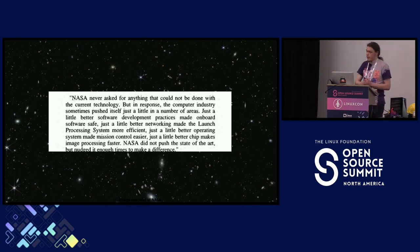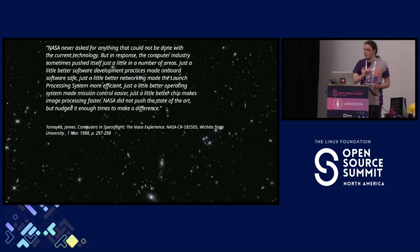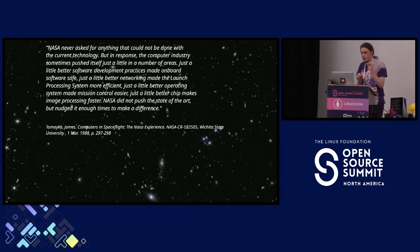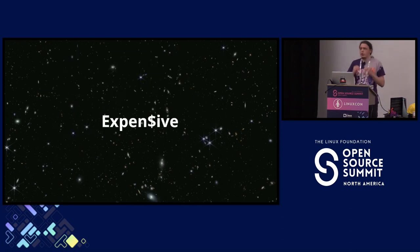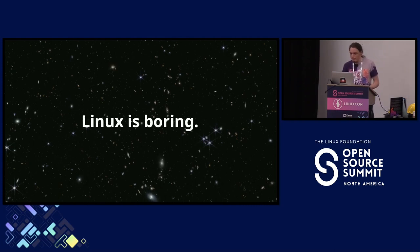Dr. Tomayko mentions this at the end of his report, and the reviewers thought it important enough to restate it in the foreword: 'NASA never asked for anything that could not be done with current technology. But in response, the computer industry sometimes pushed itself just a little in a number of areas. Just a little bit better software development practices made onboard software safe. Just a little bit better networking made the launch processing system more efficient. Just a little bit better operating system made mission control easier. Just a little bit better chip makes image processing faster. NASA did not push the state of the art, but nudged it enough times to make a difference.' And pushing the envelope is really expensive, especially when you're trying to do it in a vertically integrated fashion. In order for Linux to be considered for use in space, it needs to be safe — it needs to be boring.